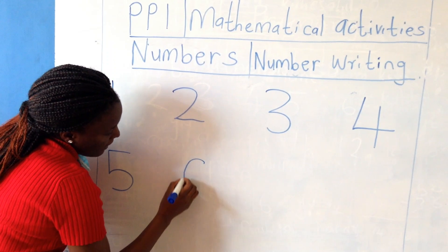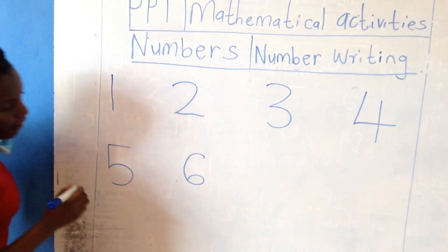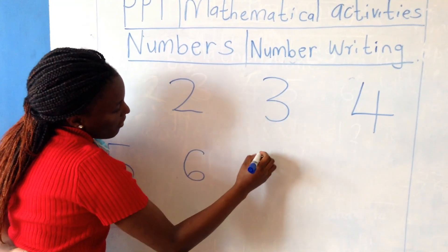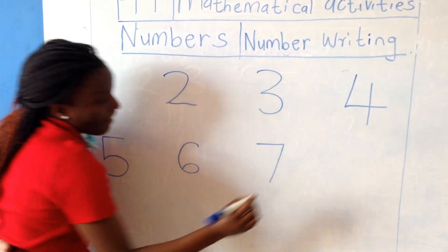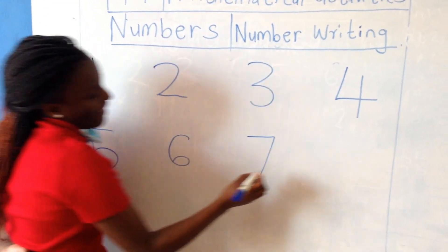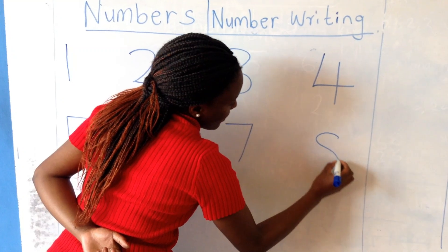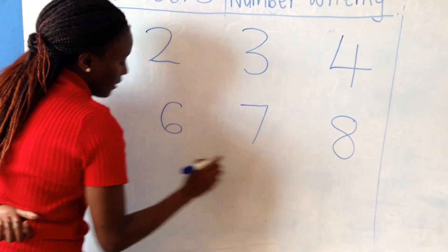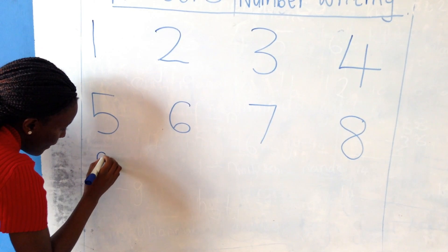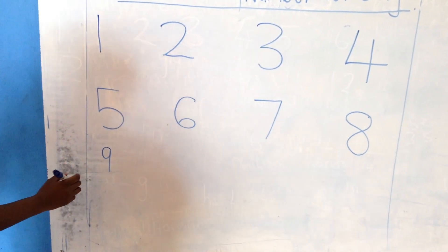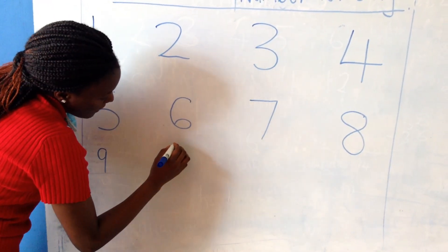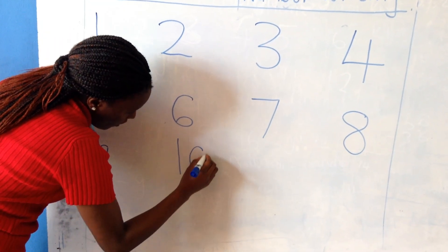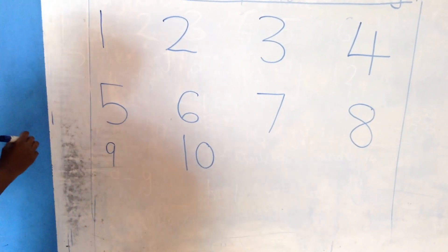Number six is like a telephone — tell your mommy. Number seven is like a walking stick. Number eight is like a snake. Number nine is like a nodding head. Number ten is a stick and a ball.